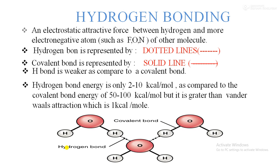Hydrogen bonding is weaker as compared to covalent bonds. If we look at hydrogen bond energy, it is two to ten kilocalories per mole, as compared to covalent bond energy which is 50 to 100 kilocalories per mole.